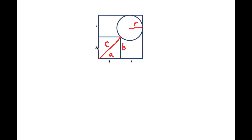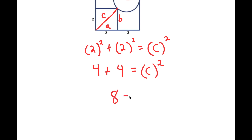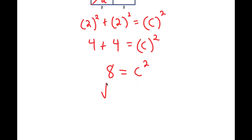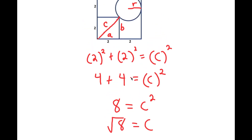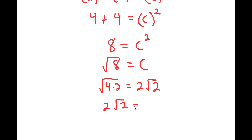We already know that A is 2 and so is B. So I get 2 squared plus 2 squared is equal to C squared. 2 squared is 4, and again 2 squared is 4, so I get 4 plus 4 is equal to C squared. 4 plus 4 is 8, so 8 equals C squared, meaning the square root of 8 equals C. I can simplify this to the square root of 4 times 2, which is equal to 2√2. So 2√2 is equal to C.